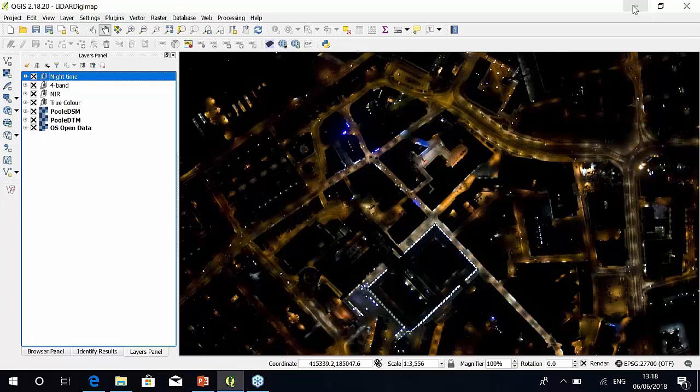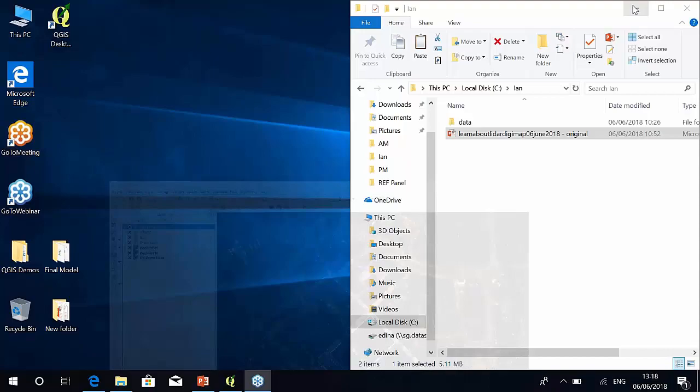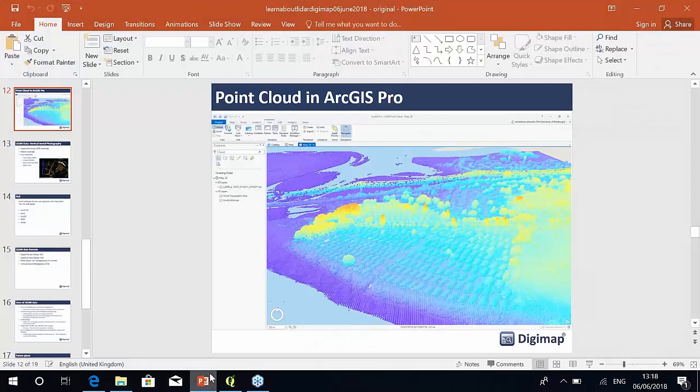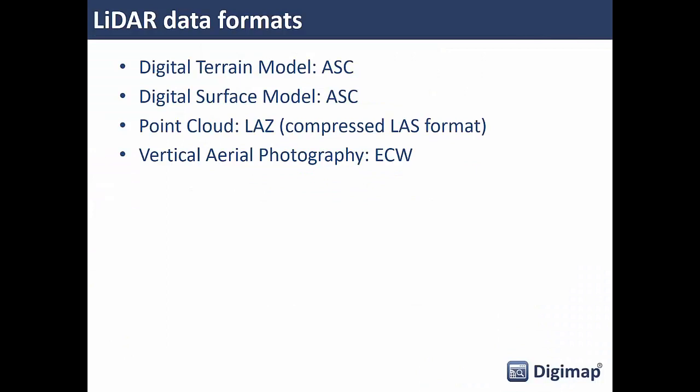That's an example of what the data looks like — you can open it in a GIS application without having to do anything to it, with the exception of the point cloud which needs a little work. In terms of data formats: DTMs and DSMs are provided as ASCII grid files, which most GIS and CAD applications will open, including Revit, AutoCAD, ArcGIS, and QGIS. Point cloud data comes in LAZ format (compressed LAS). Aerial photography is supplied in ECW format — Enhanced Compressed Wavelet — a compressed image format that most applications will read without trouble.